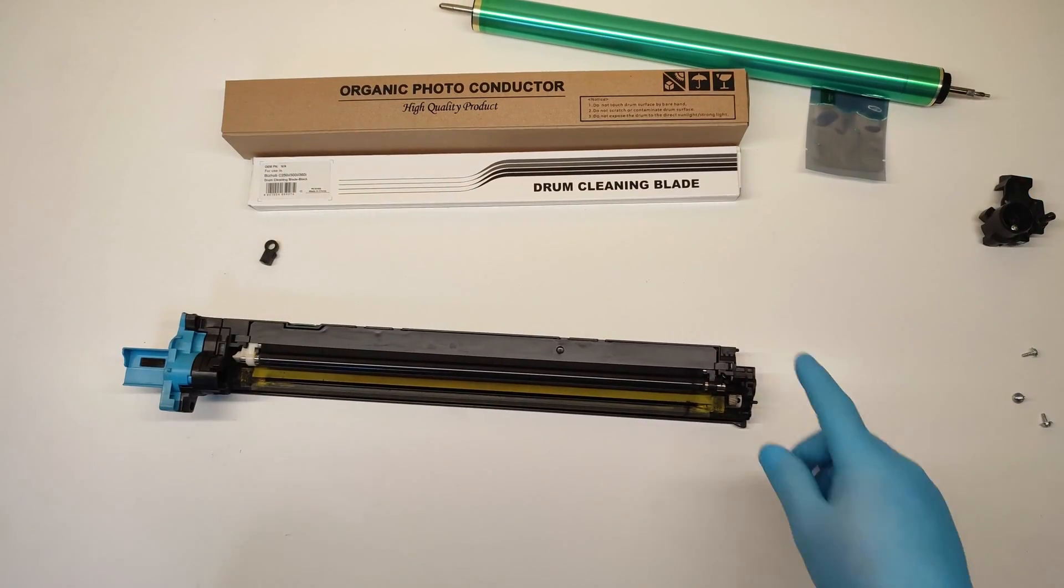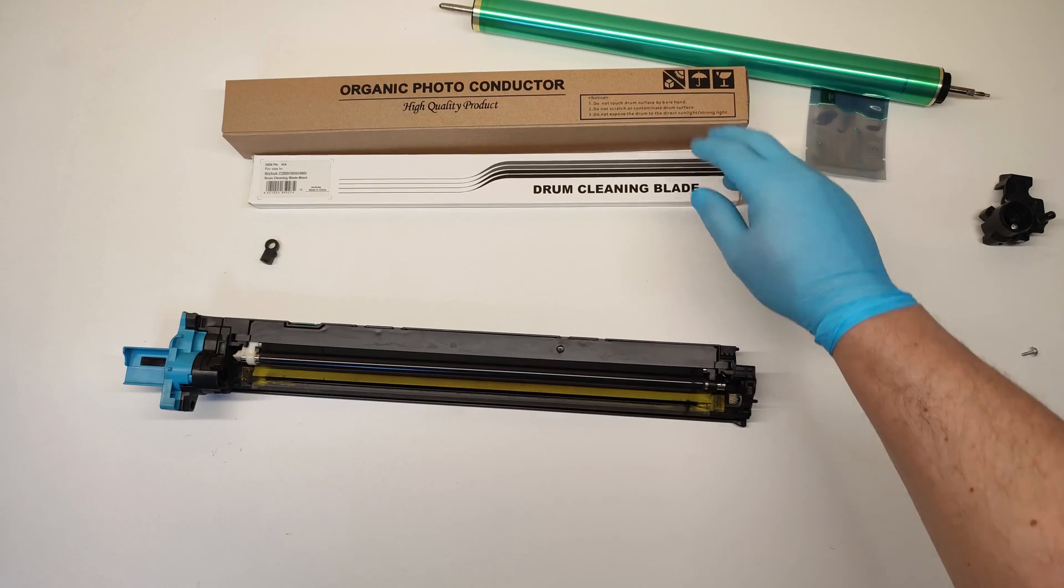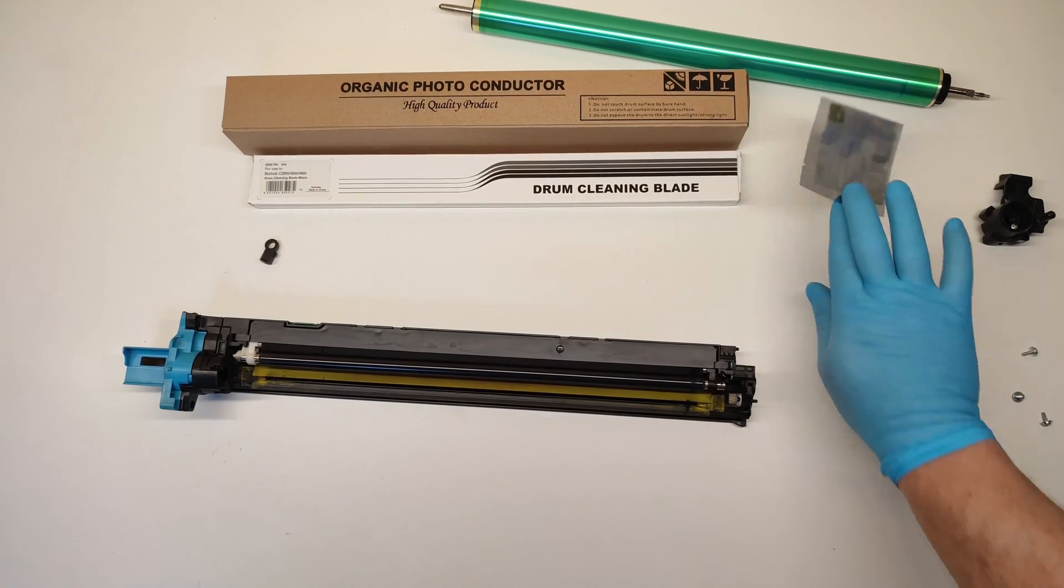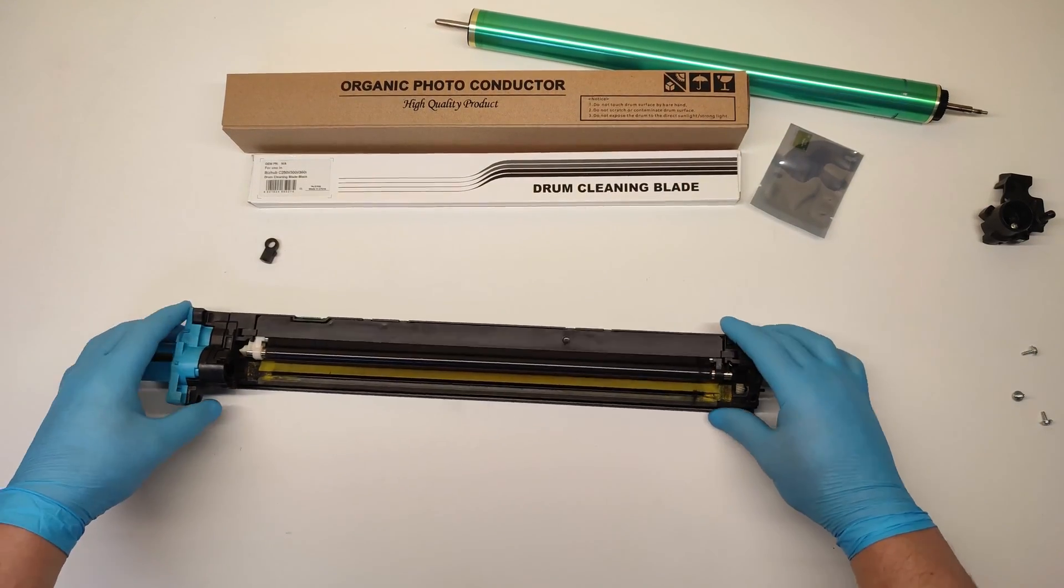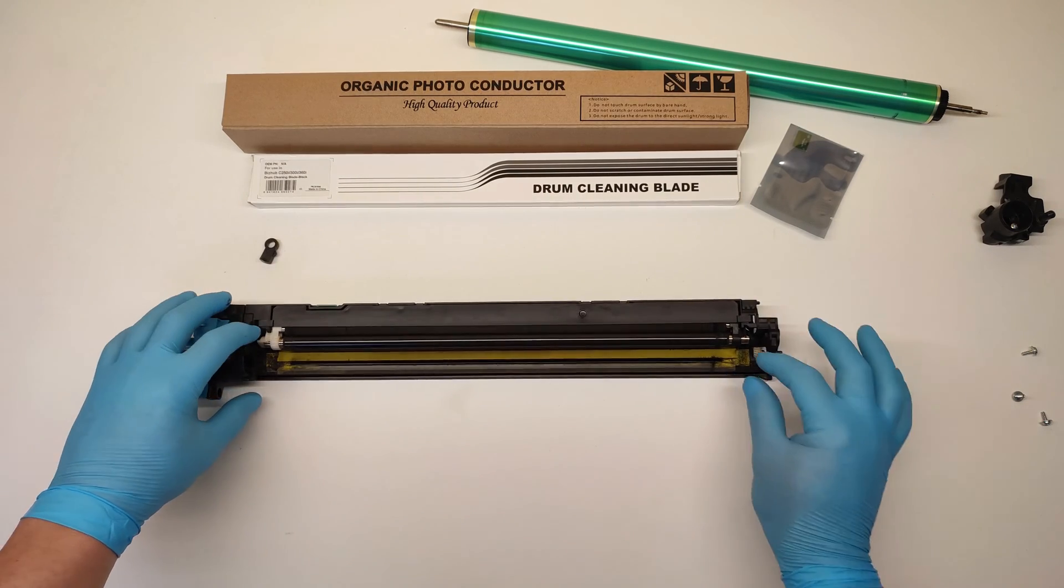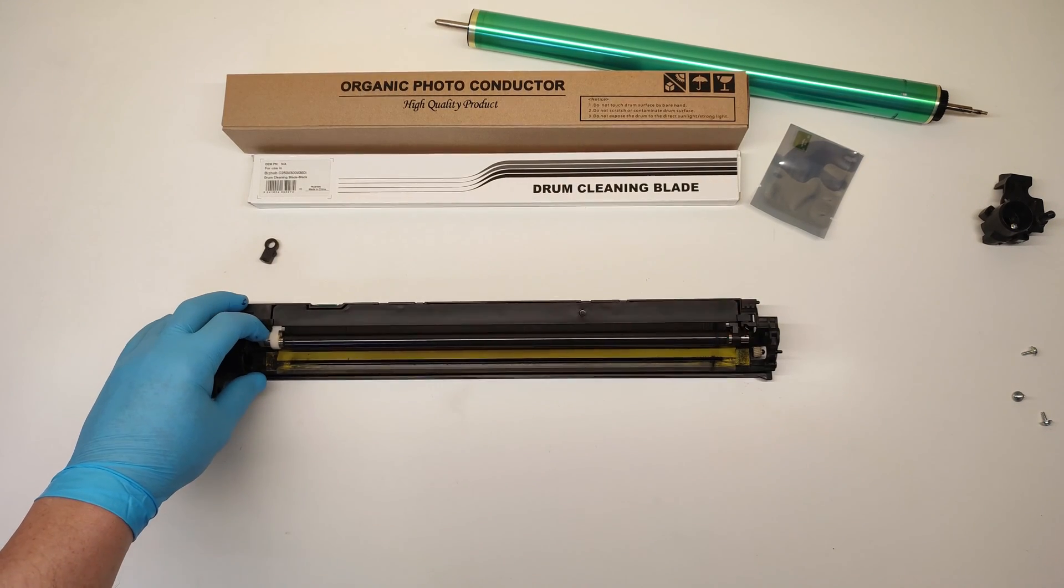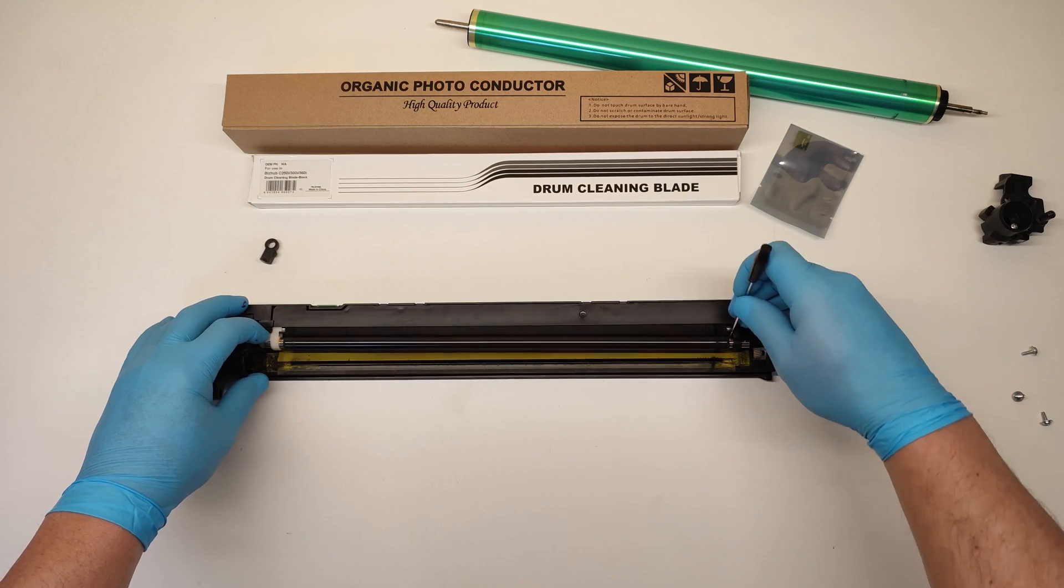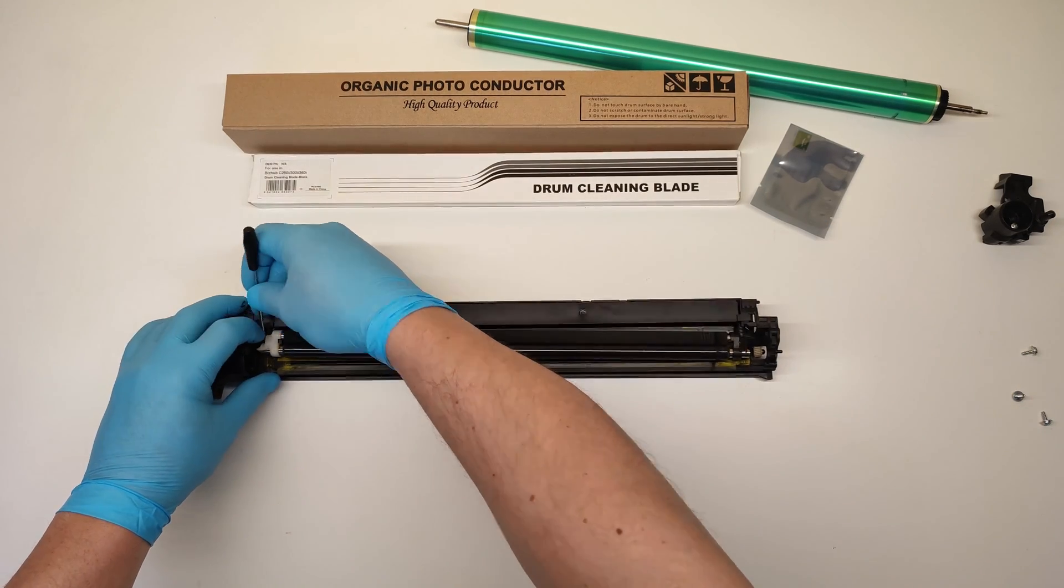As you see I have obtained the cleaning blade, wiper blade, OPC drum and the chip. Now it's easy to take out the PCR and the cleaning roller.